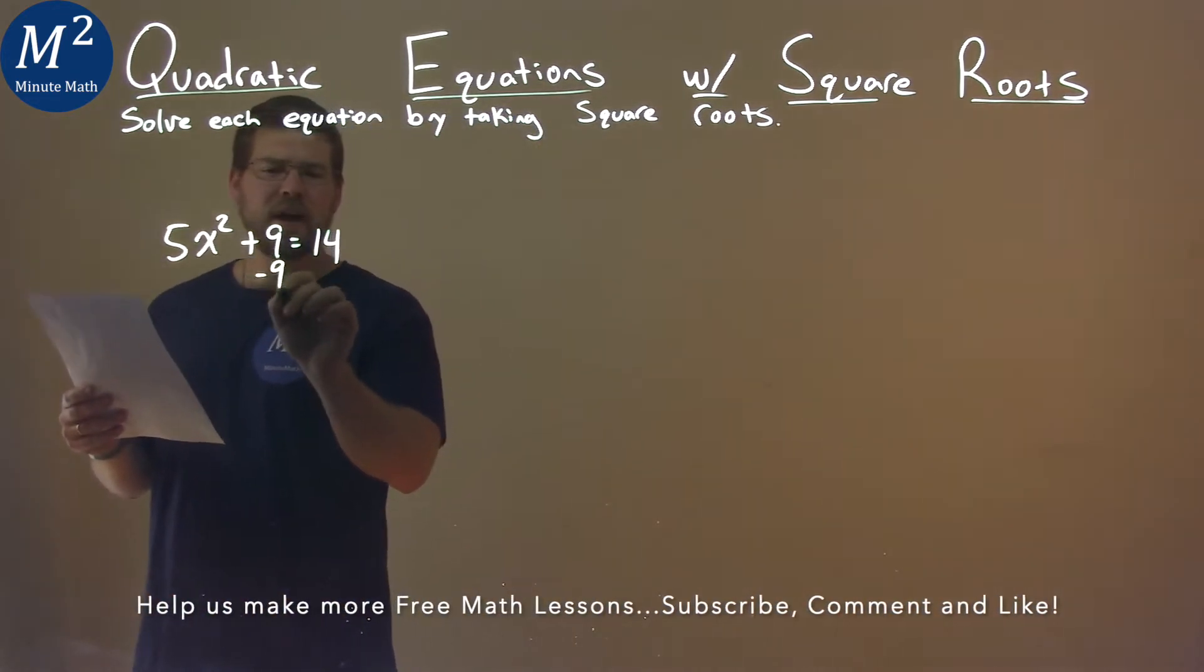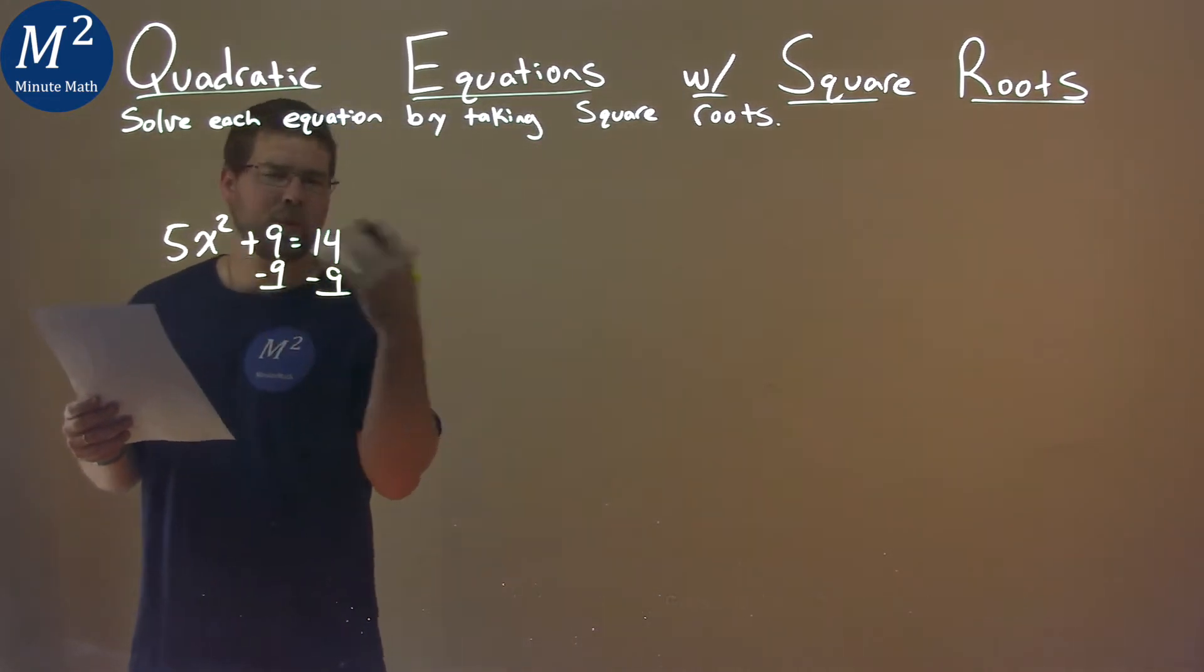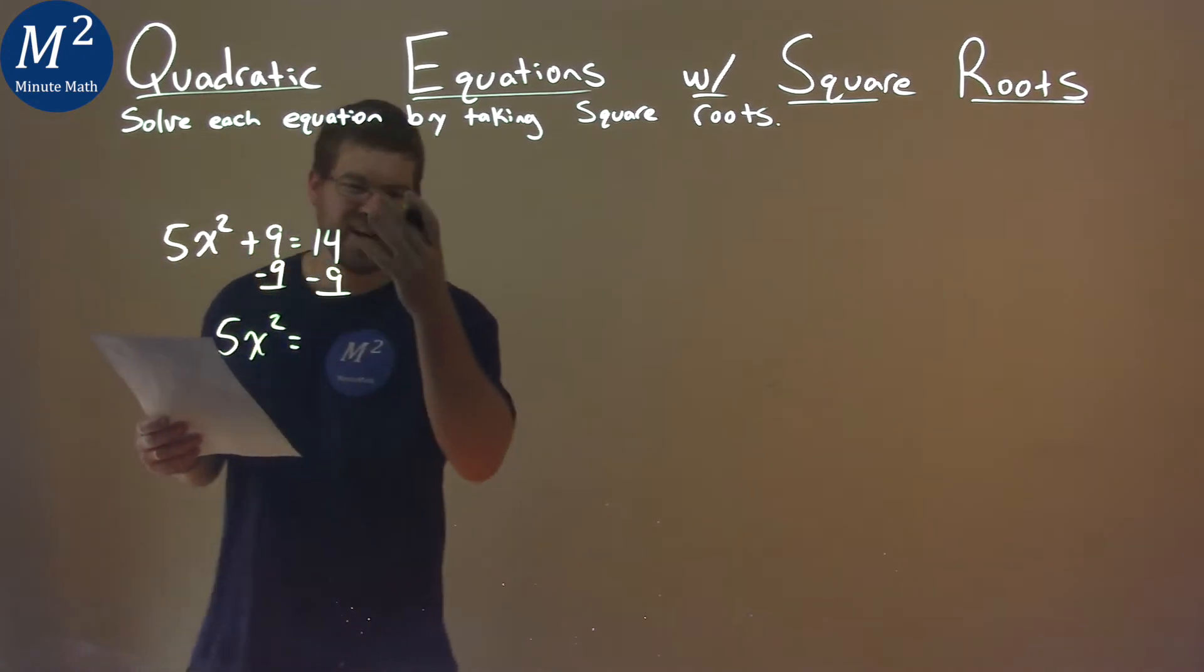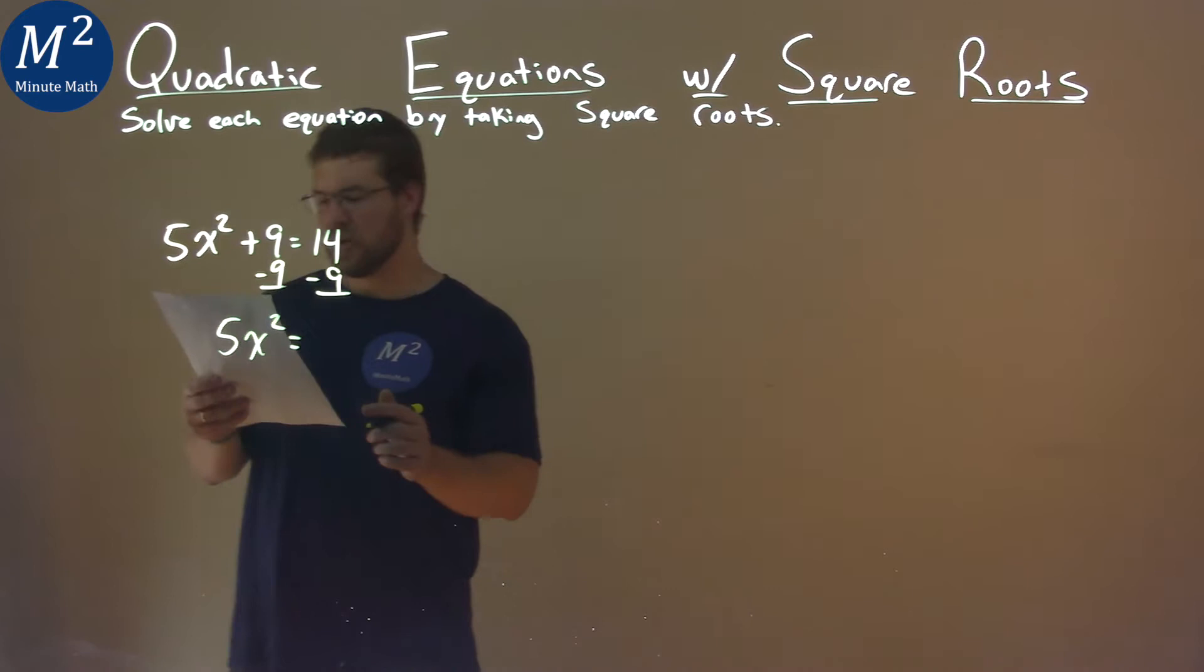First thing I want to do is subtract 9 from both sides. We want to get x by itself. So we have 5x squared equals 14 minus 9 is a good old 5.